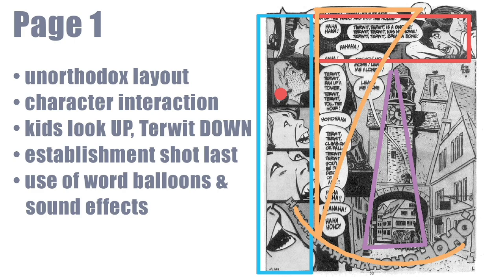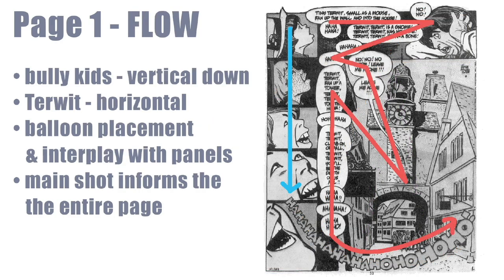Once we get to the establishment shot, you can see that strong triangle or vertical accentuating the clock tower, the statues on top, Turwit on the ledge, and the kids down below. In the second kids panel, there is a close-up of a kid with a bunch of freckles on his face, and he shows up later — so Toth gives us that signifier and establishes that character. Looking at the flow of the page, the kids are on that vertical down and Turwit across. Even if our eye goes down, we're probably popping right back up. If we go straight across, our eye is following the balloons. Once we get to the no-no-no panel in the top middle, that tail is pointing toward Turwit on the ledge. Toth is telling us where he is and who that character is in the upper right, and our eye is going back and forth. The balloon placement gives us that interplay, but the main shot then informs the whole page.